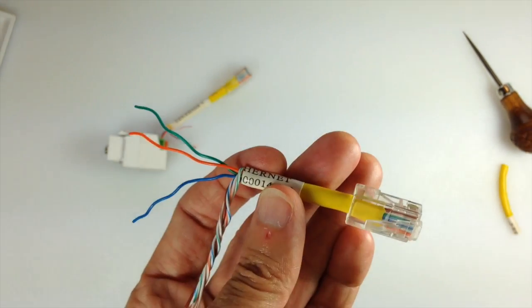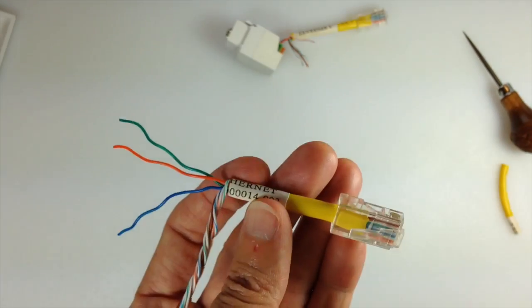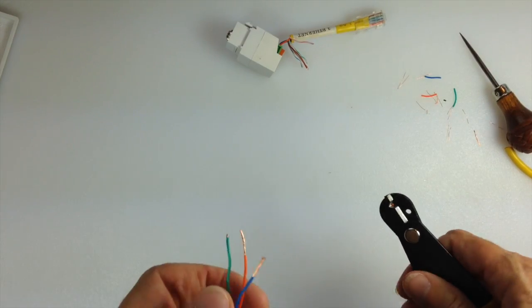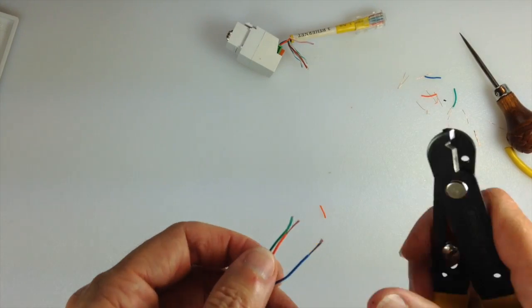Now out of the three wires we're keeping and going to use, the orange, green, and blue, we're going to strip about three-eighths of an inch of the insulation off of each of those.